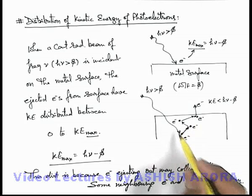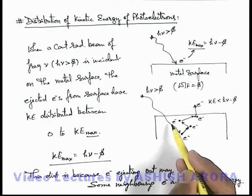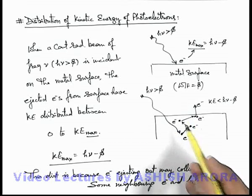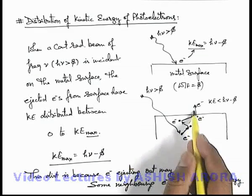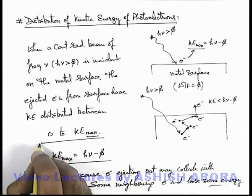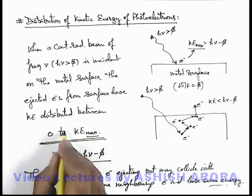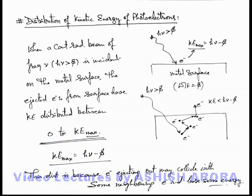So it is not necessary that all electrons which are absorbing a photon will be able to come out. But here we are talking that all those electrons which are coming out from the metal will have their kinetic energy distributed in the range from zero to maximum kinetic energy.